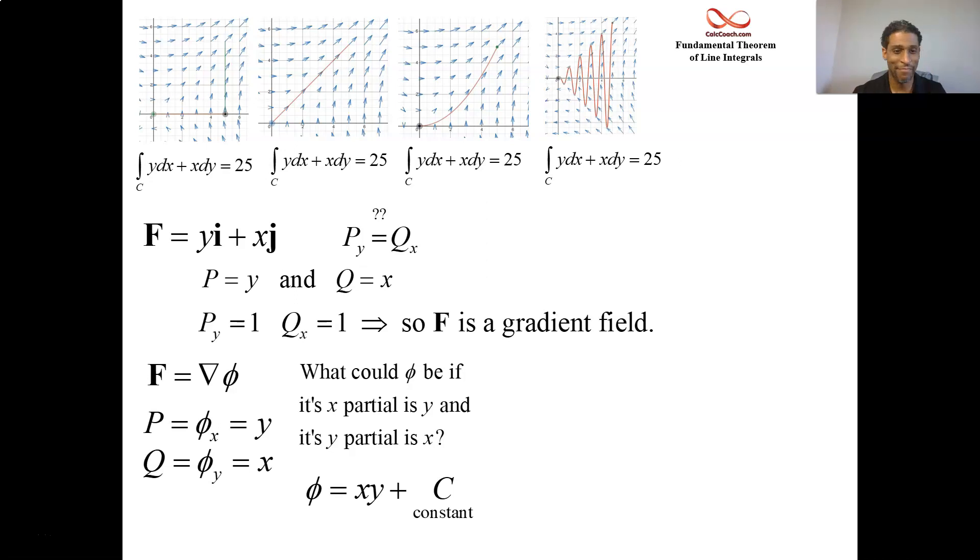So we can get 25 by evaluating this phi at the ending point (5,5) and subtract from it evaluating at the starting point (0,0). But that starting point, plugging in (0,0) to this phi function, the product will be 0. Plugging in (5,5) to this phi function, the product is 25. You can drop the plus c, of course.